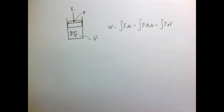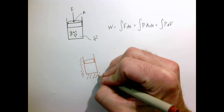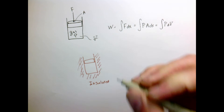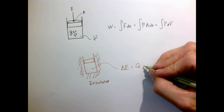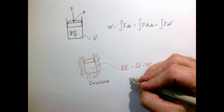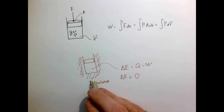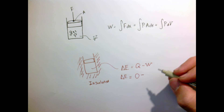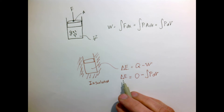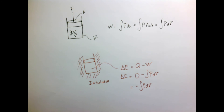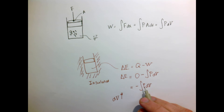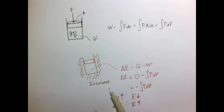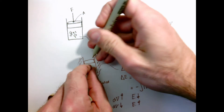Consider a simple example: take our piston and cylinder and fully insulate it. Writing the first law for the gas inside: the change in internal energy equals heat in minus work out. Heat in is zero because it's insulated — no heat crosses the boundary. The work out is minus PdV, so the internal energy changes as minus the integral of PdV. Since pressure is always positive, when the volume increases (expansion), the energy decreases; when volume decreases (compression), the energy increases. This is consistent with the concept that compressing a gas heats it up, and expanding it cools it down.